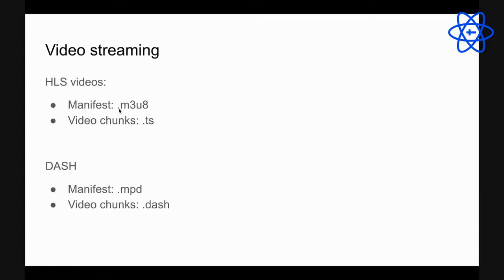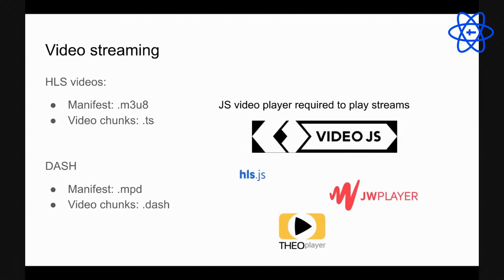The manifest file is an M3U8 file and the chunks are .ts files for HLS. In DASH you'll see MPD and .dash files. These files don't work in the native HTML5 video player, so you need a JavaScript video player. There are free ones like Video.js and HLS.js, plus paid options. You need a JS player to handle all the adaptive streaming logic.